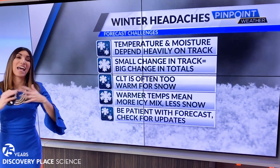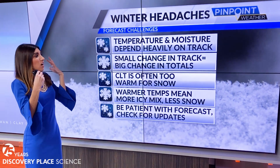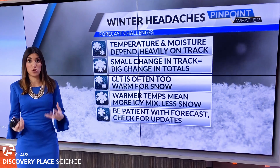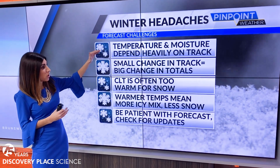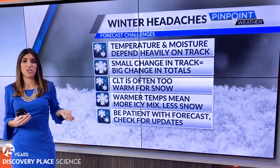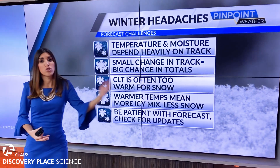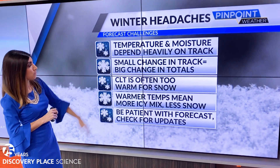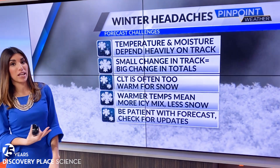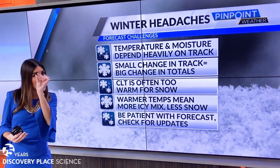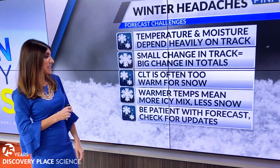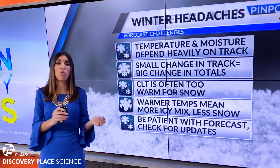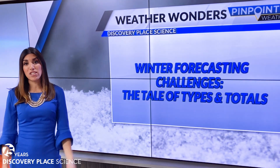So again, a forecasting headache. The takeaway: temperature and moisture have a lot to do with the type of precipitation and how it accumulates, and that is heavily dependent on the track of the storm. A little movement in the storm track can change the type and totals of wintry precipitation. Just two degrees difference can mean the difference between freezing rain, sleet, snow, heavy snow, or wet snow. Small differences can also mean big differences in totals.